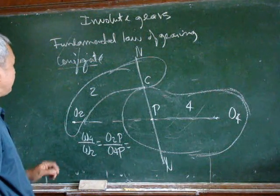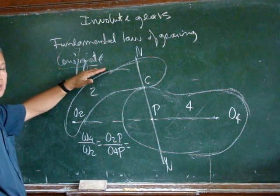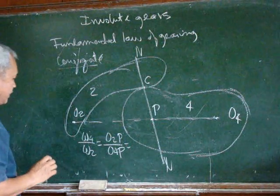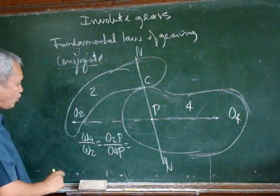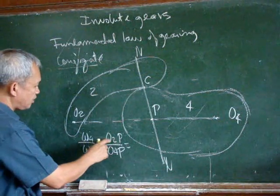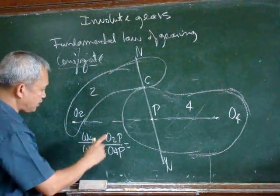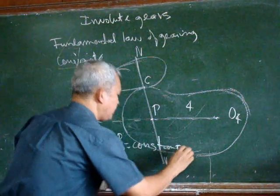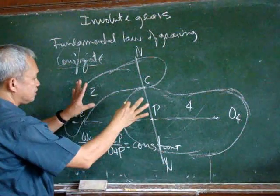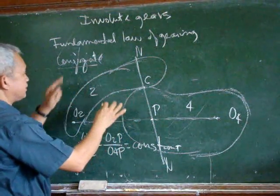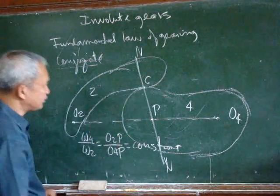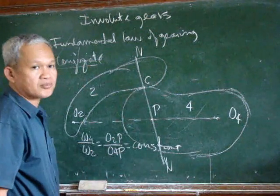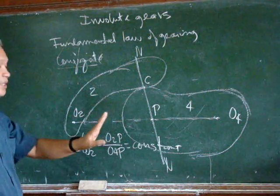If we have a conjugate relationship, the surfaces are in conjugate shape, then omega 4 over omega 2 must be equal to O2P over O4P, and this must be constant. That means for these two bodies to be conjugated at any position, a common normal must always pass through the point P. For the shape of the teeth of gears, there are currently two standard shapes.